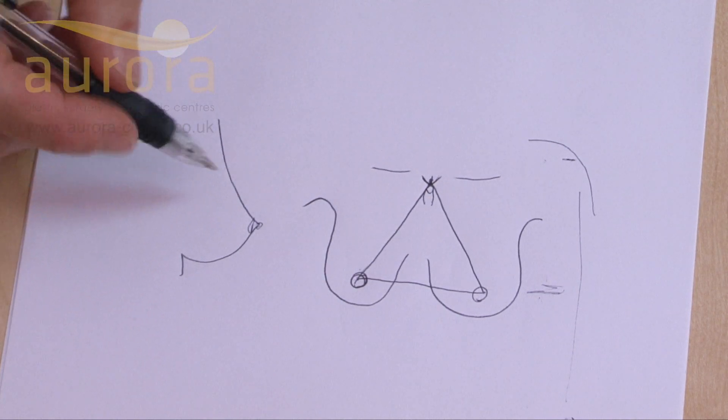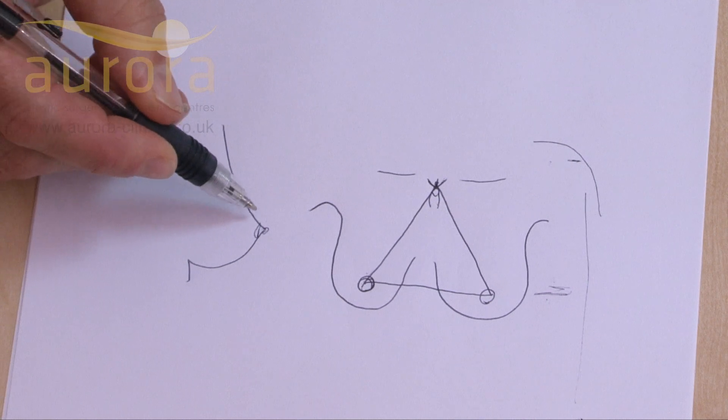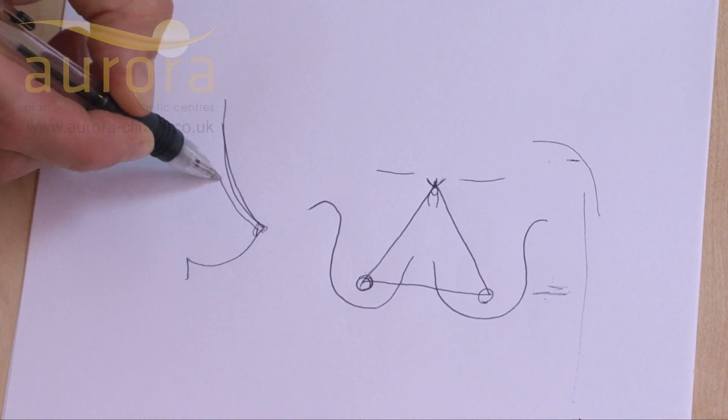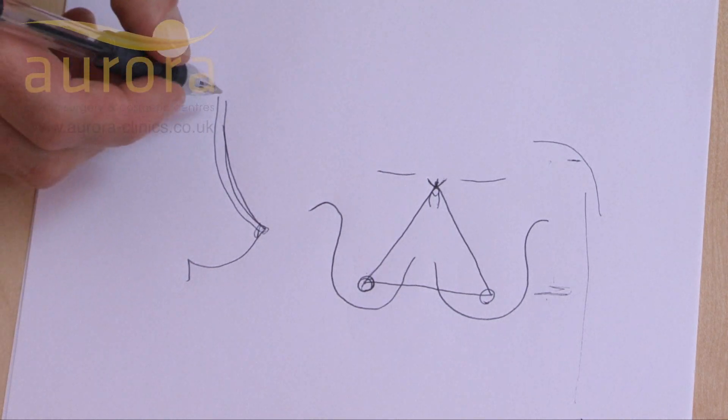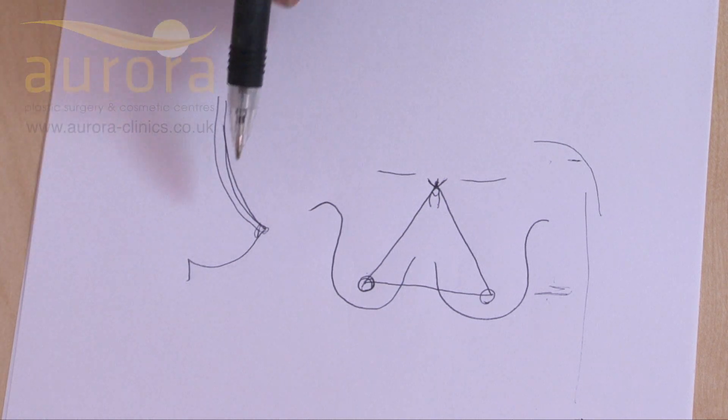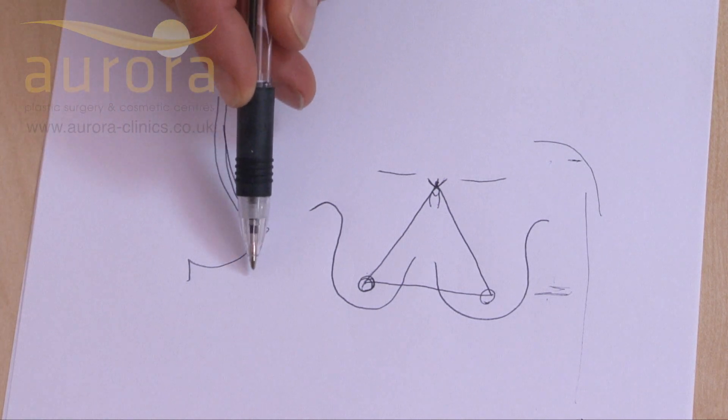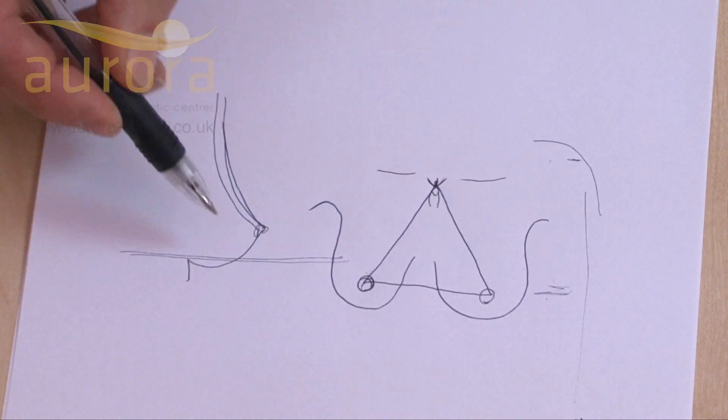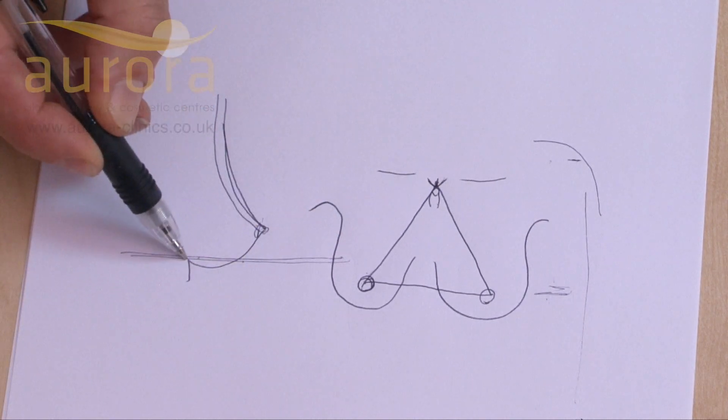So what we can have, particularly for women after they've had babies, is we can lose volume in this area here. But in other cases, we can lose volume and we can have a droop of the breast, which is a lowering of the nipple position. But you see, in this case, the nipple lies above the fold.